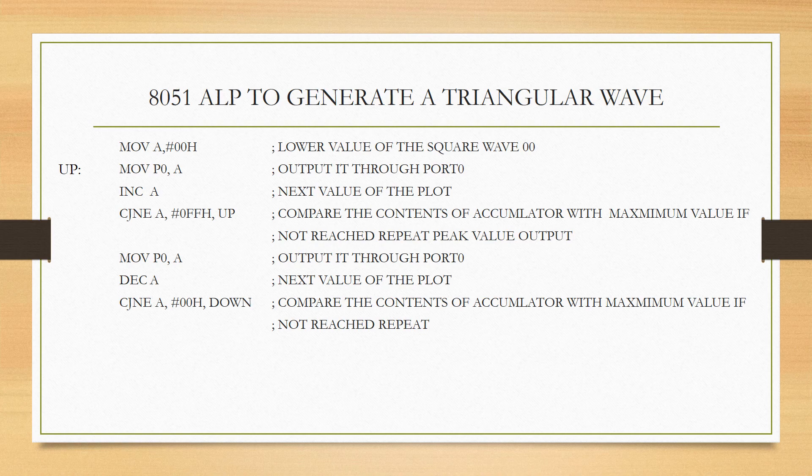What is the content of the accumulator right now? The accumulator contains FE. Is FE equal to 00? No. For that reason, this process will be repeated. Since the accumulator content was not equal to the lowest peak value, this loop is repeated again. FE is put onto Port 0, then decrement the accumulator — FE becomes FD. FD is compared with 00; both are not equal, so it will again jump to the label DOWN. In this fashion, this process is repeated.